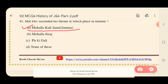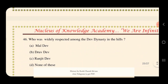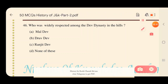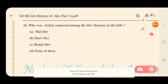Question 46: Who was the most widely respected ruler among the Dev dynasty in the hills? Options: A) Mal Dev, B) Dhruv Dev, C) Ranjit Dev, D) None of these. The answer is C — Ranjit Dev. He was the most respected person of the Dev dynasty.